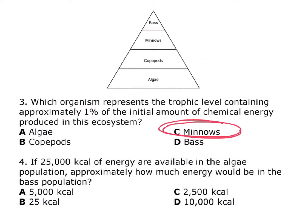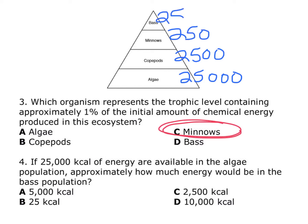Question 4 says: if 25,000 kilocalories of energy are available in the algae population, approximately how much energy would be in the bass population? I'll start by putting 25,000 on the algae. That would mean 2,500 on the copepods, then 250 on the minnow, and then 25 on the bass. So there would be 25 kilocalories in the bass population.